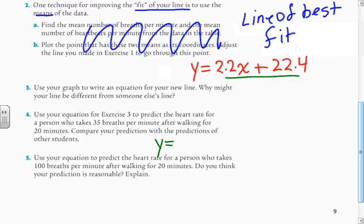It says here, we want to predict the heart rate for a person who takes 35 breaths per minute. Well, breaths per minute are my x. So I'm just going to do 2.2 times 35 plus 22.4. And I'm just going to calculate that and that's going to be my prediction there.